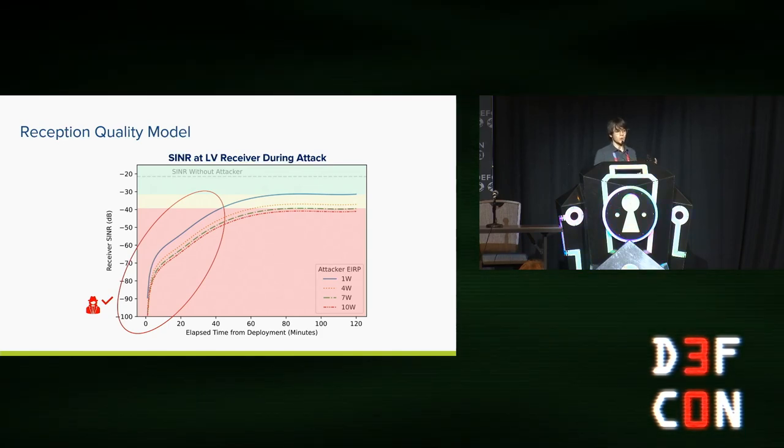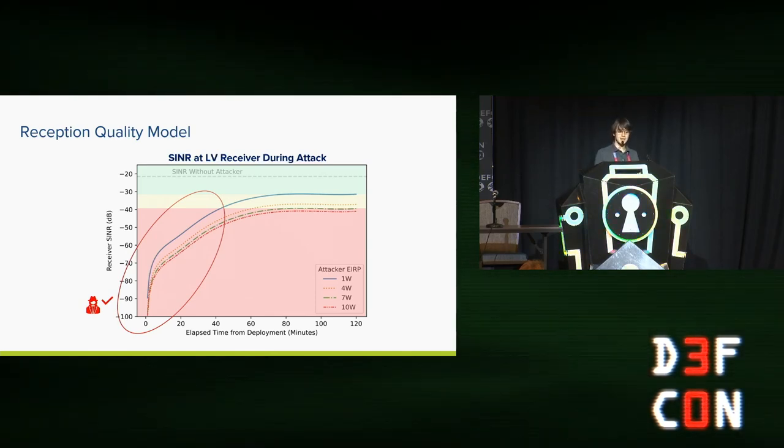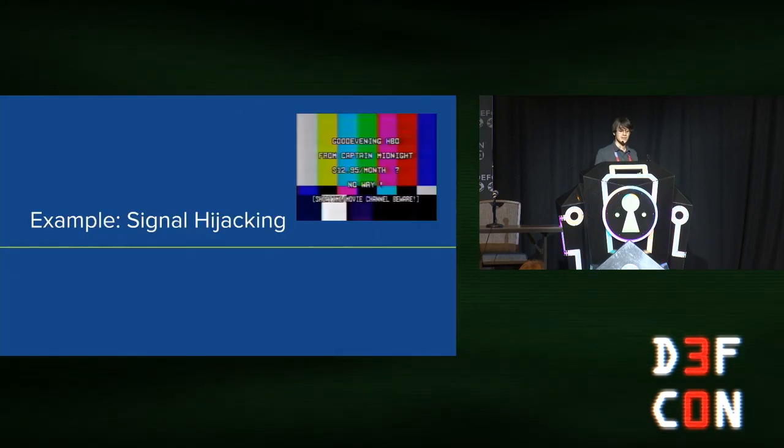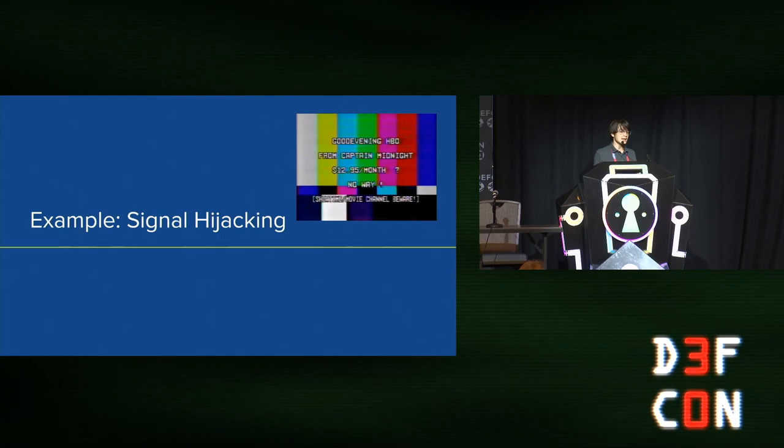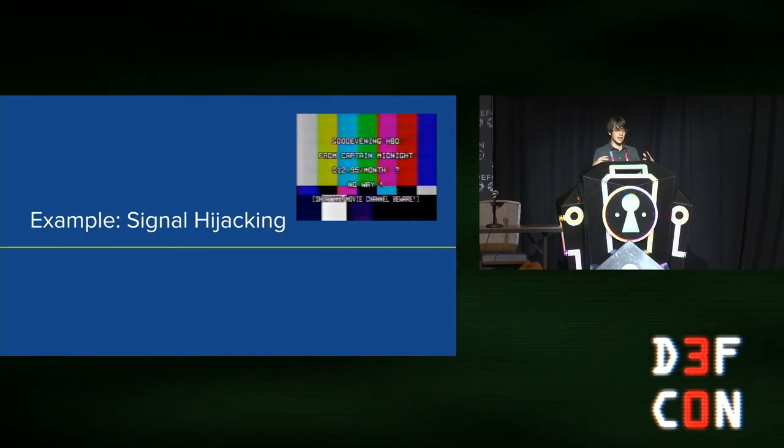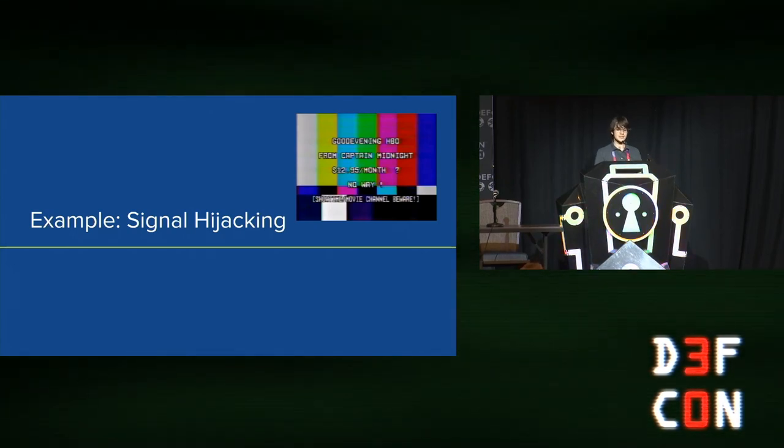So, this is an example of an attack where we mess with a signal that is coming from space to something close to the ground. But there's a different way to look at space jamming, which is to flip things around and look at signal hijacking attacks. So, attacks like the Captain Midnight incident. These are scenarios where you want to get a broadcast satellite in orbit to transmit your message instead of the message that it's supposed to be transmitting for its owner.